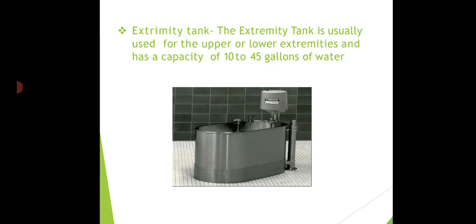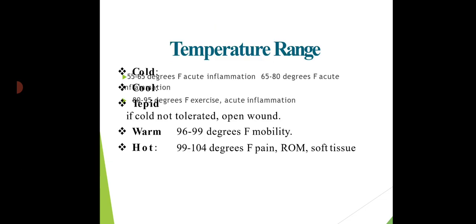The extremity tank is usually used for the upper or lower extremities and has a capacity of 10 to 45 gallons. Regarding temperature range, for hot treatment it would be between 99 to 104 degrees Fahrenheit, for warm it would be between 96 to 99 degrees, and for cold it would be between 55 to 65 degrees.